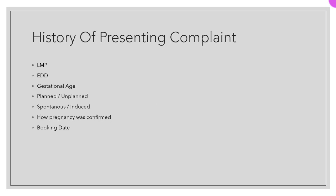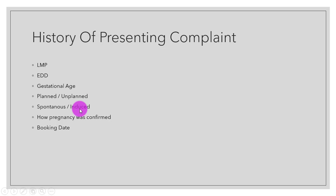The third part is the history of presenting complaint. Firstly you should ask LMP, then calculate her EDD by Naegele's rule — I have already taught this in my previous video. We will ask the gestational age, whether her pregnancy was planned or unplanned, whether it was spontaneous or induced, and how pregnancy was confirmed — mostly by urine pregnancy test done at home or at hospital. Then we will ask about her booking date, which refers to the first time she went to hospital after she expected to be pregnant.